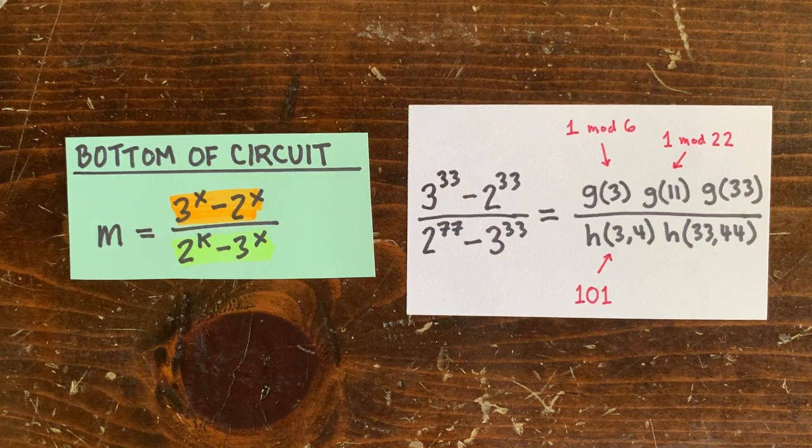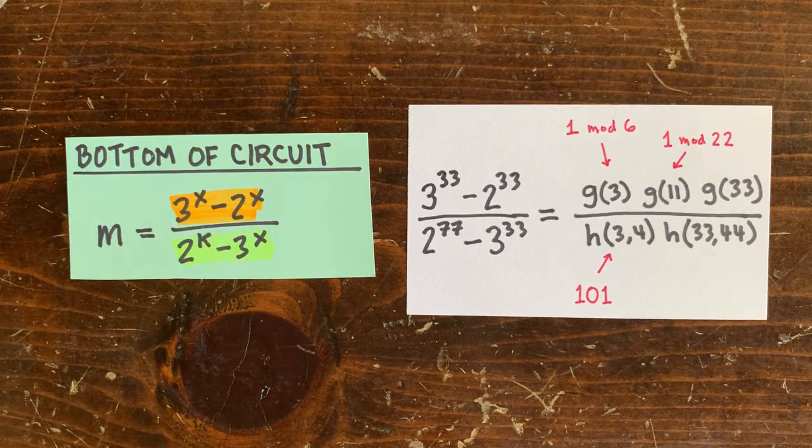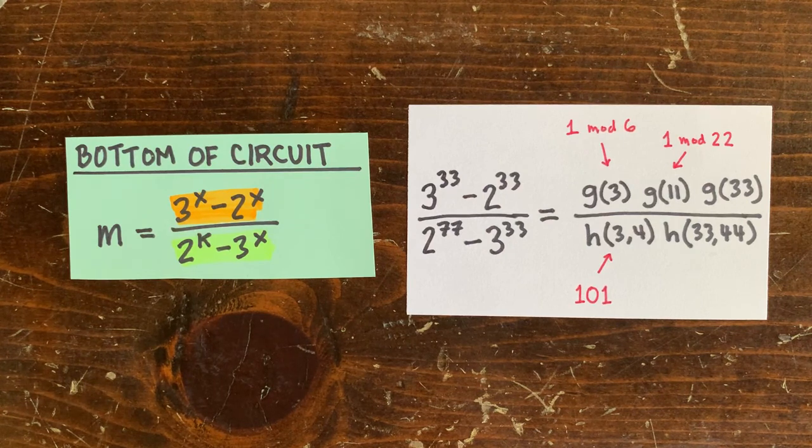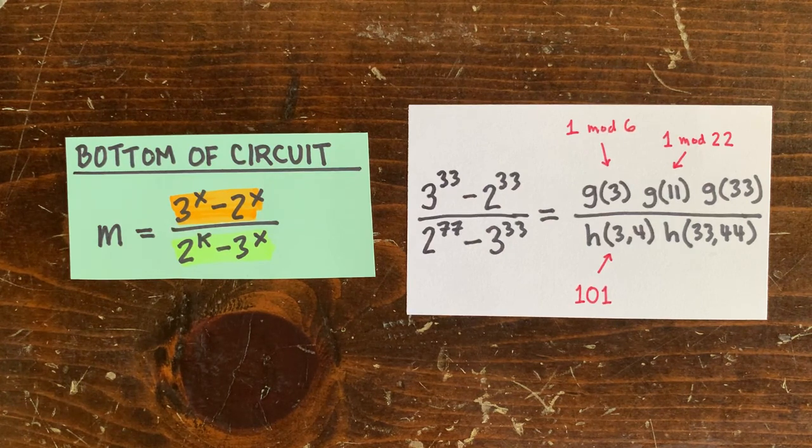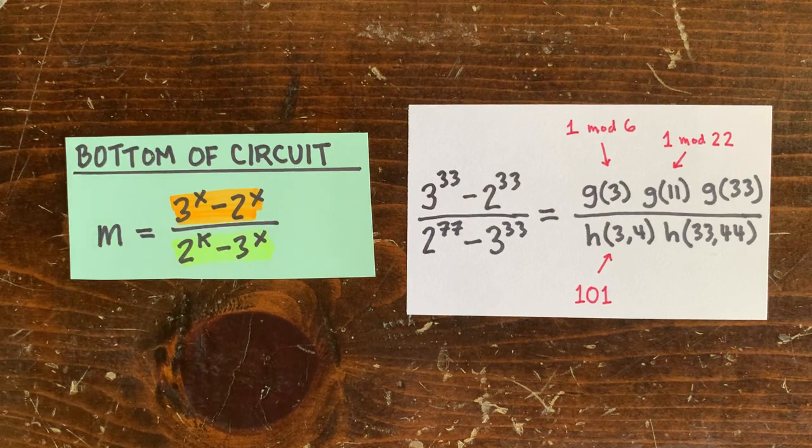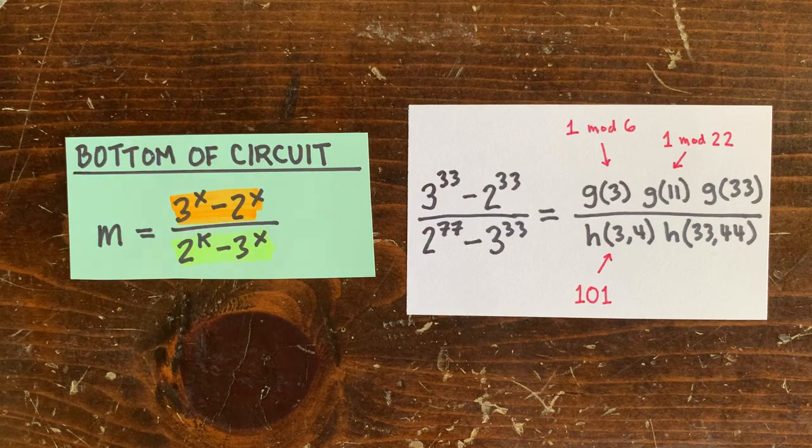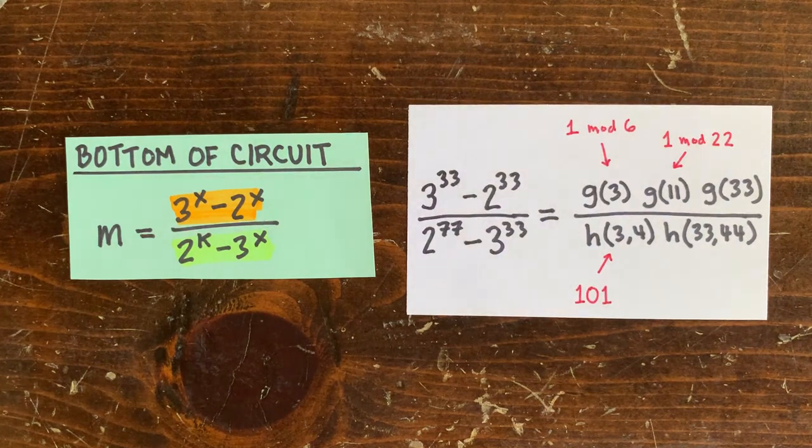But we do know that it's g of 3 times g of 11 times g of 33 over h of 3, 4 times h of 33, 44. And we know that g of 3 is 1 mod 6, g of 11 is 1 mod 22, and h of 3, 4 is 101 and stuff like that. So let's see if this helps us figure out why this fraction and all the other fractions like this never divide evenly.